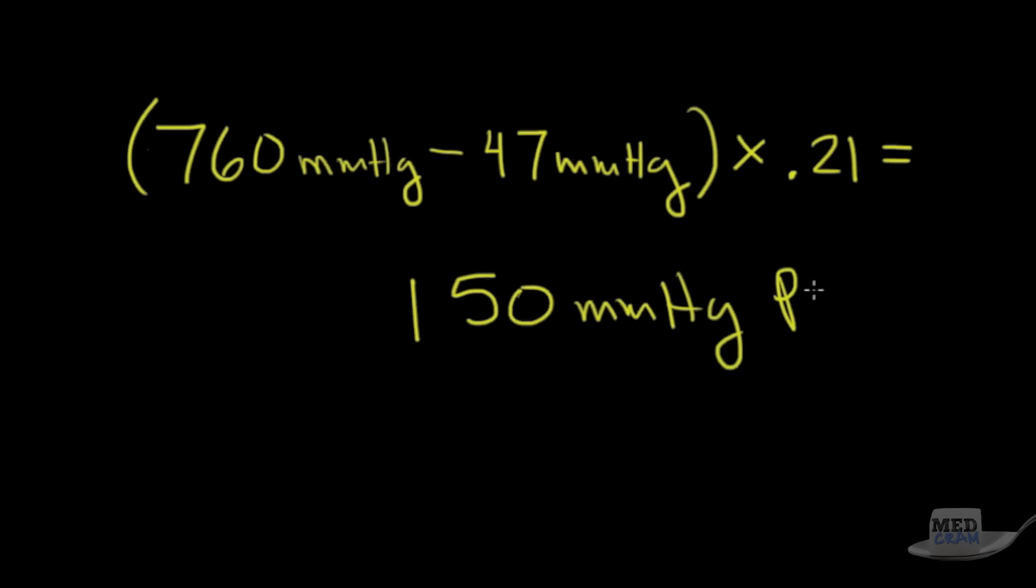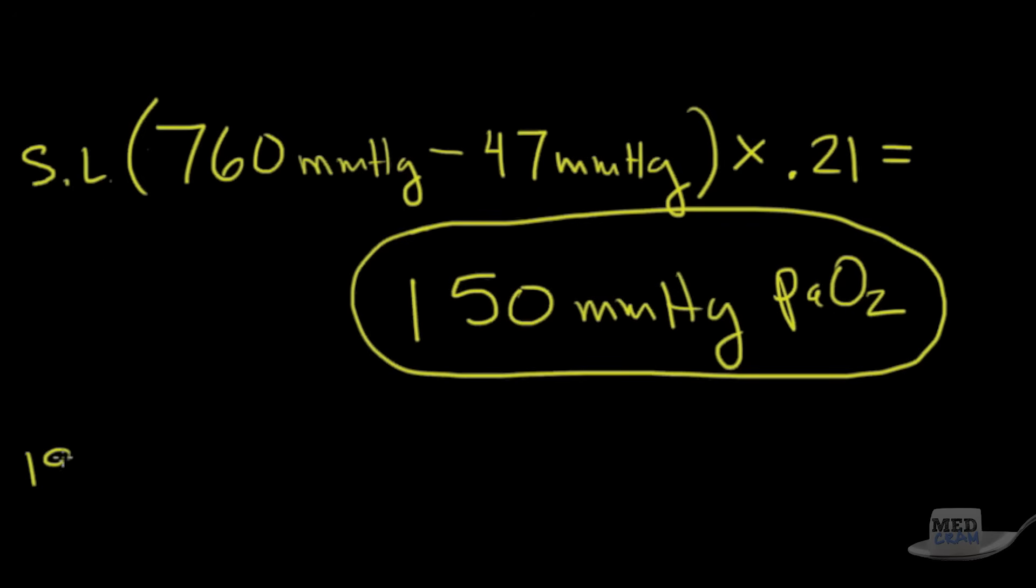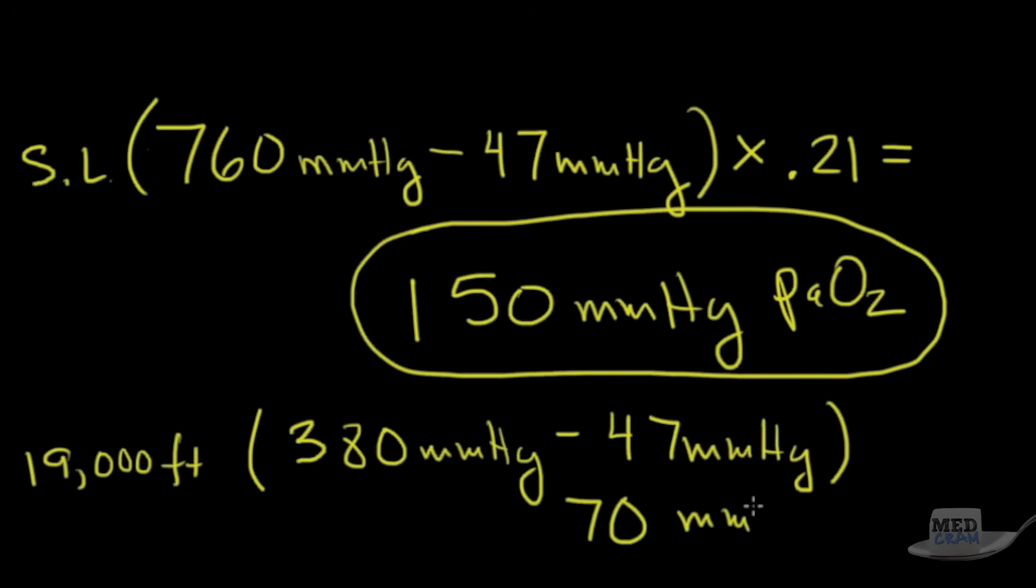So this is the PaO2 available to us at sea level. Now, at 19,000 feet, which is approximately just above base camp for Mount Everest, the total barometric pressure at that altitude is about 380 millimeters of mercury. We subtract the 47 millimeters of mercury from the vapor pressure. And what we come up with is about 70 millimeters of mercury of PaO2.